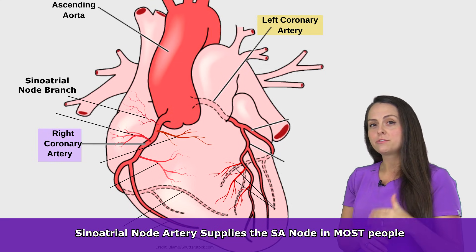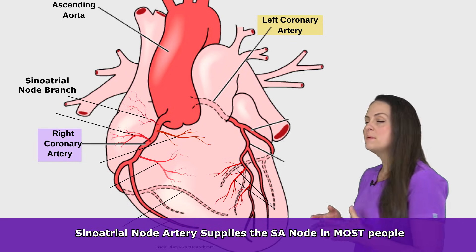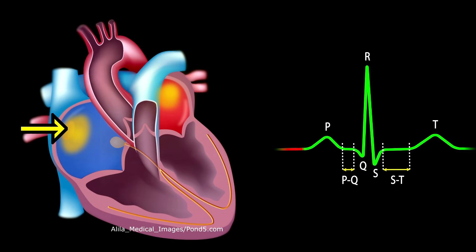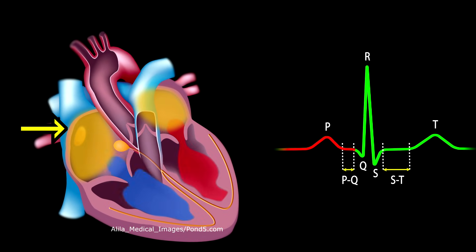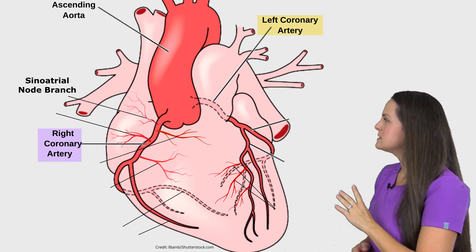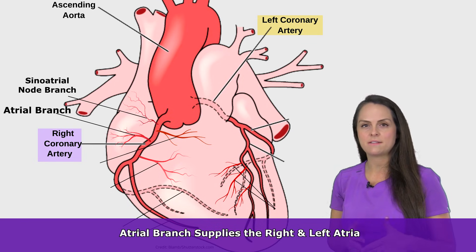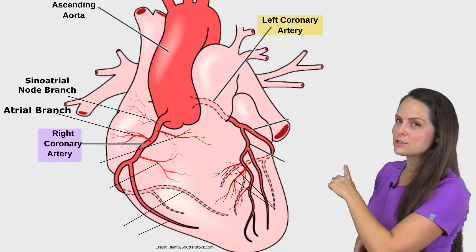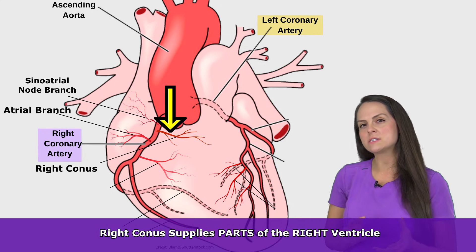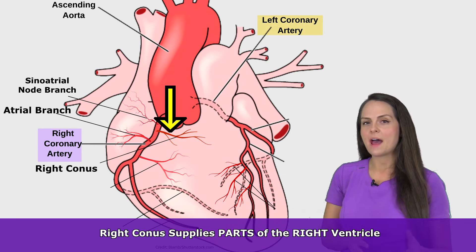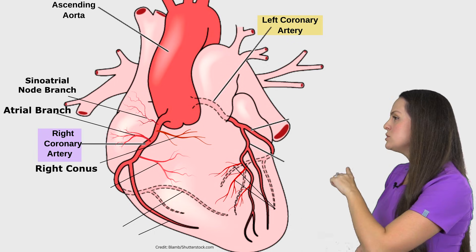The sinoatrial node artery supplies the SA node in most people. Remember, the SA node is the first part of the electrical conduction system — it helps create that P wave in our ECG waveform. Going down a little bit, we have the atrial branch, which branches off to supply our right and left atria. Then just across, another branch is called the right conus, which supplies parts of that right ventricle.